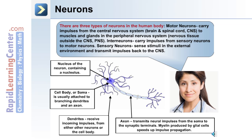The following image depicts the major structures of a neuron. There's a nucleus, which contains a nucleolus, and the nucleus is in the cell body or soma, which is usually attached to branching dendrites and an axon. The dendrites receive incoming impulses from either other neurons or the cell body. The axon transmits neural impulses from the soma to the synaptic terminals. Myelin produced by glial cells speeds up impulse propagation.